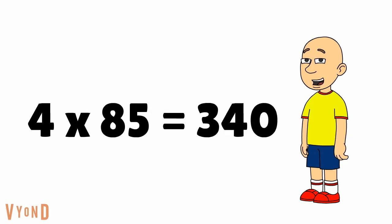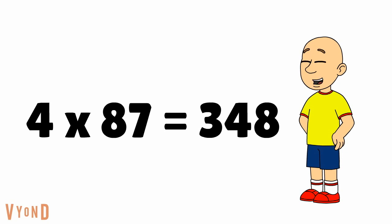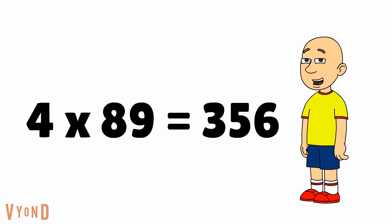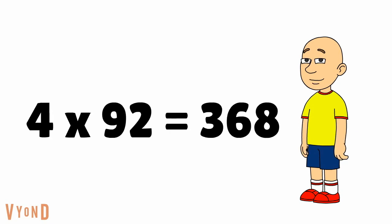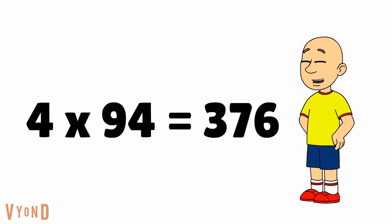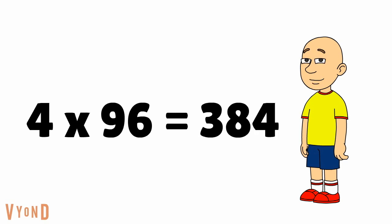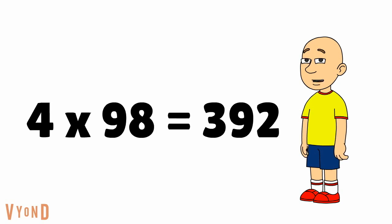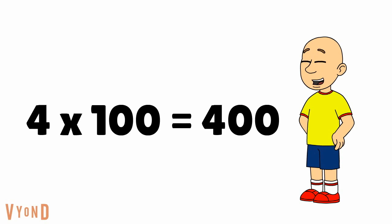4 times 83 equals 332, 4 times 84 equals 336, 4 times 85 equals 340, 4 times 86 equals 344, 4 times 87 equals 348, 4 times 88 equals 352, 4 times 89 equals 356, 4 times 90 equals 360, 4 times 91 equals 364, 4 times 92 equals 368, 4 times 93 equals 372, 4 times 94 equals 376, 4 times 95 equals 380, 4 times 96 equals 384, 4 times 97 equals 388, 4 times 98 equals 392, 4 times 99 equals 396, and 4 times 100 equals 400.